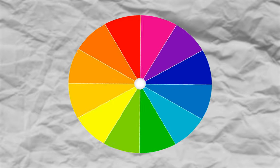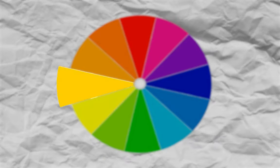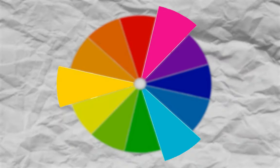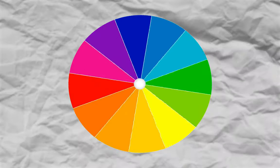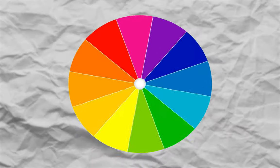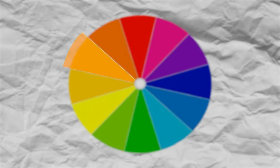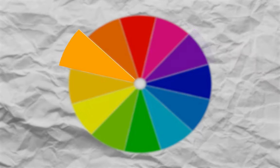Secondary colors are derived from the addition of primary colors — that's where you have yellows, magenta, and cyans. Tertiary colors are derived from the addition of secondary colors to primary colors — that's where we have yellowish orange, bluish purple, and greenish yellow.